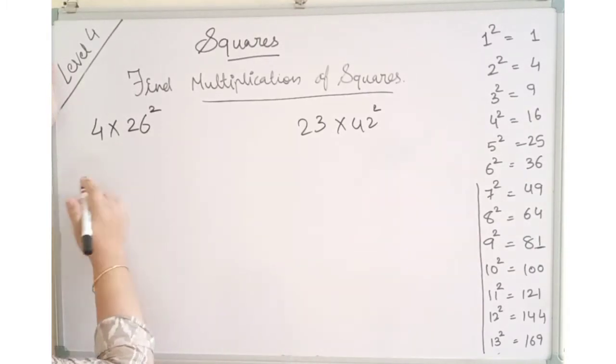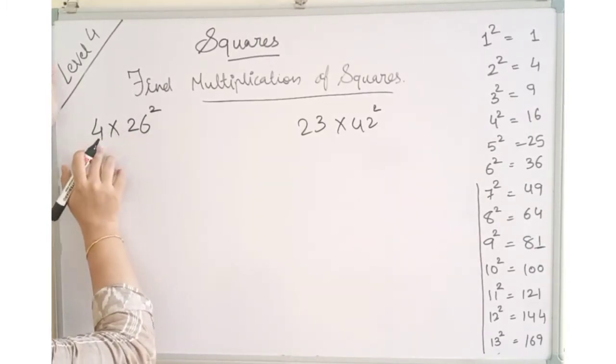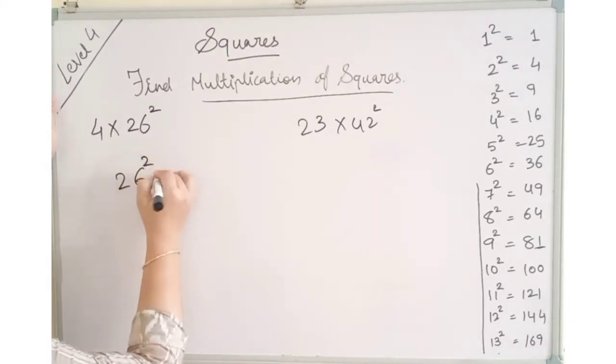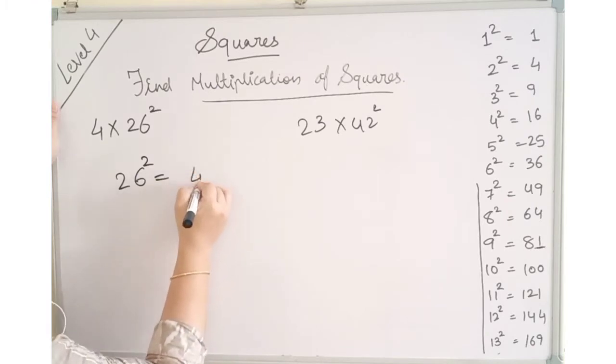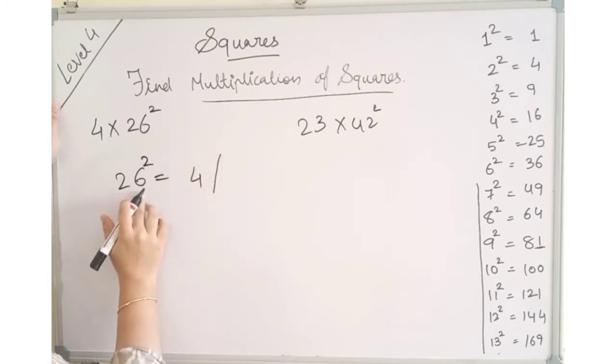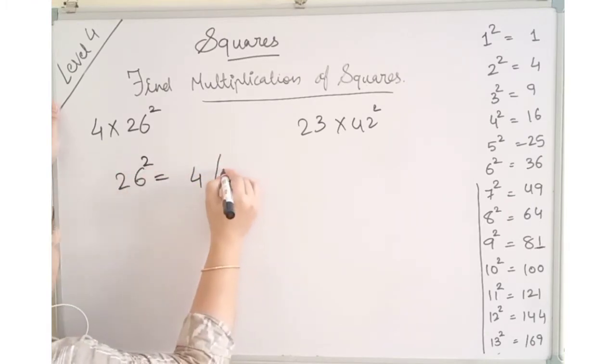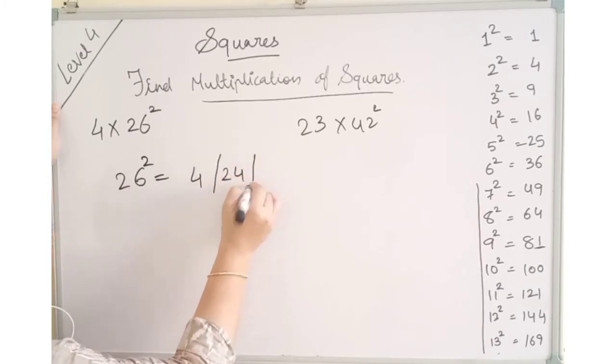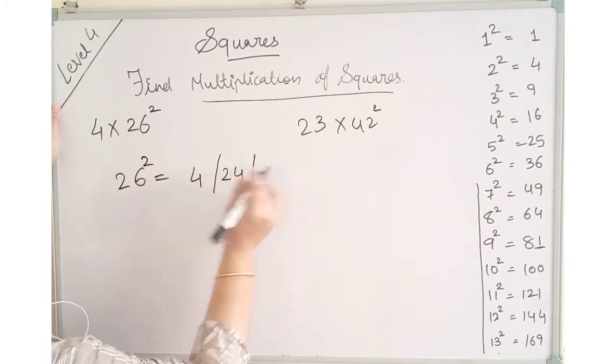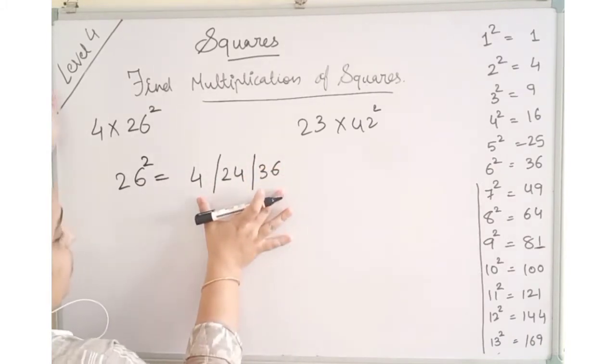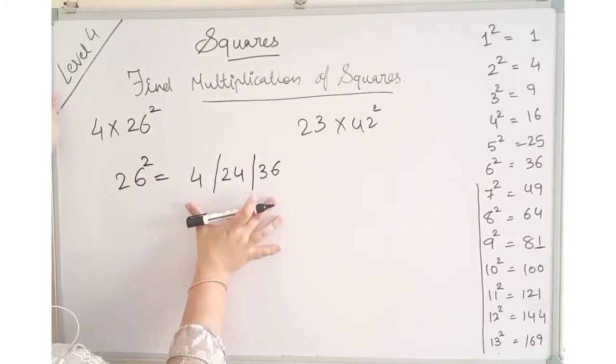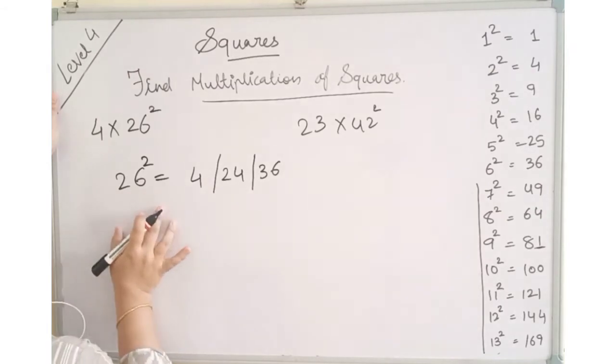Now 26 square we will find first and then 4. Or we can directly find square. With the help of duplex we can do 2 twos are 4 balancing line. 2 six are 12 twos are 24. And this is the last 6 six are 36. This will give us the final answer of 26.